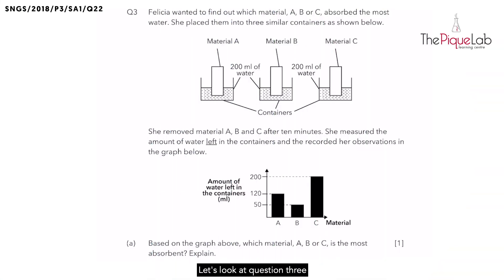Let's look at question 3 of materials in class exercise 2. Felicia wanted to find out which material A, B or C absorbed the most water. So she placed them into three similar containers as shown below. This question is testing for the material's absorbency. After 10 minutes, she removed the materials and measured the amount of water left in the containers and recorded her results in the graph below.